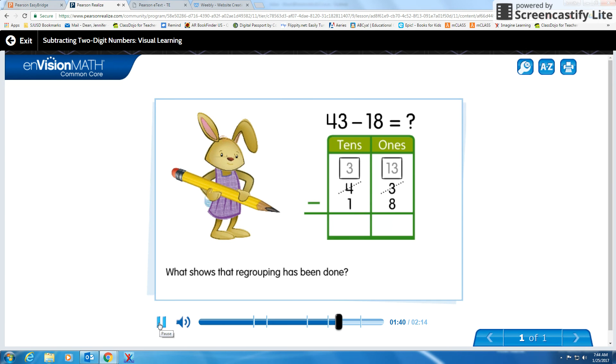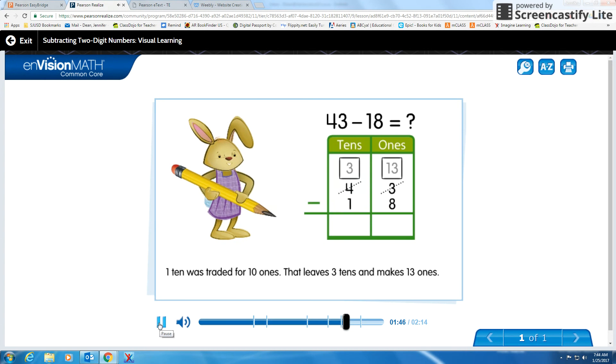What shows that regrouping has been done? One ten was traded for 10 ones. That leaves 3 tens and makes 13 ones.